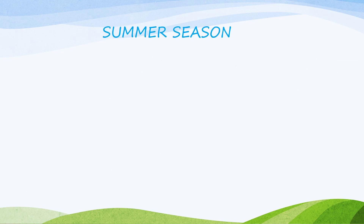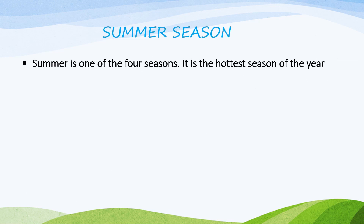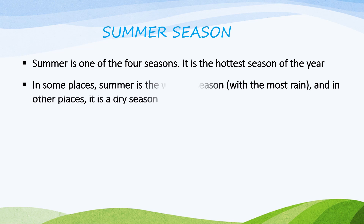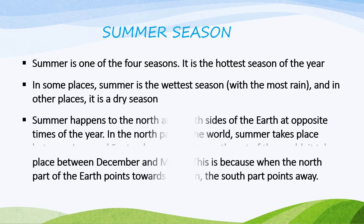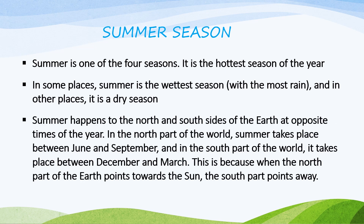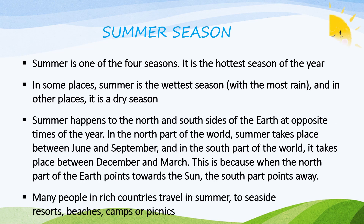Summer is one of the four seasons. It is the hottest season of the year. In some places, summer is the wettest season with the most rain, and in others it is a dry season. Summer happens to the north and south sides of the earth at opposite times of the year.